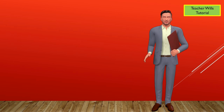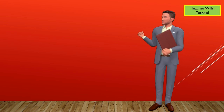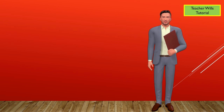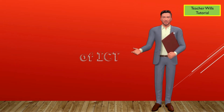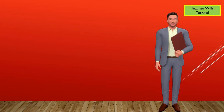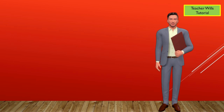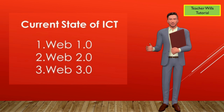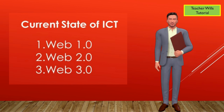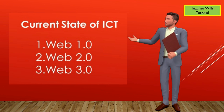While the web is often confused with the internet itself, it is actually just the most common means of accessing data online in the form of websites and hyperlinks. As computing methods are incorporated into hardware and more efficient software is developed, new ICT trends are becoming more empowered. The internet's total evolution can be divided into three generations: Web 1.0, Web 2.0, and Web 3.0.